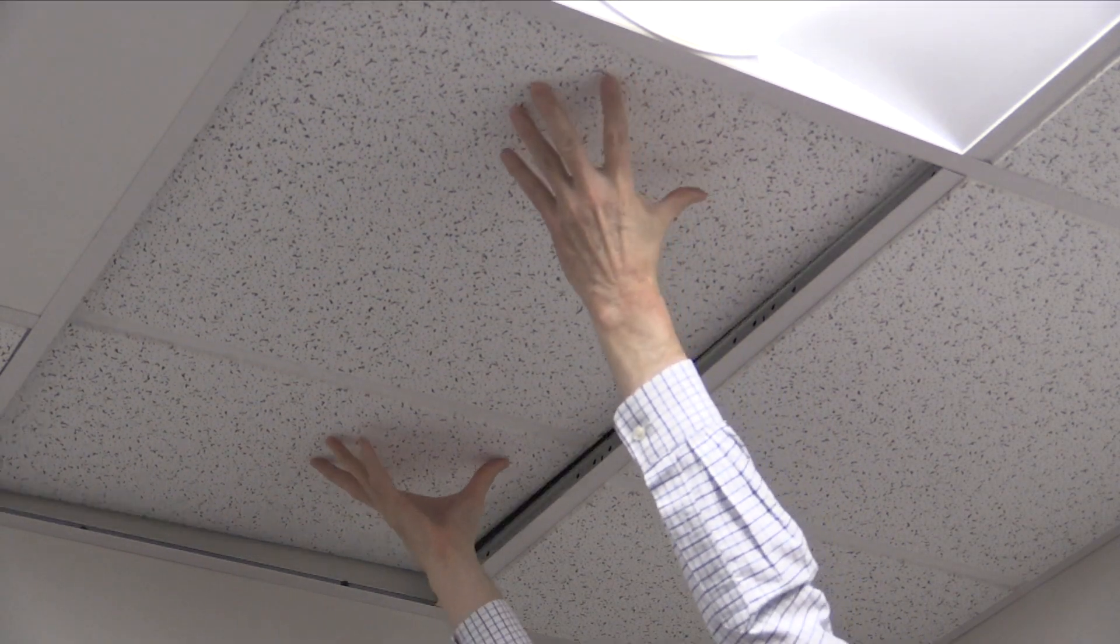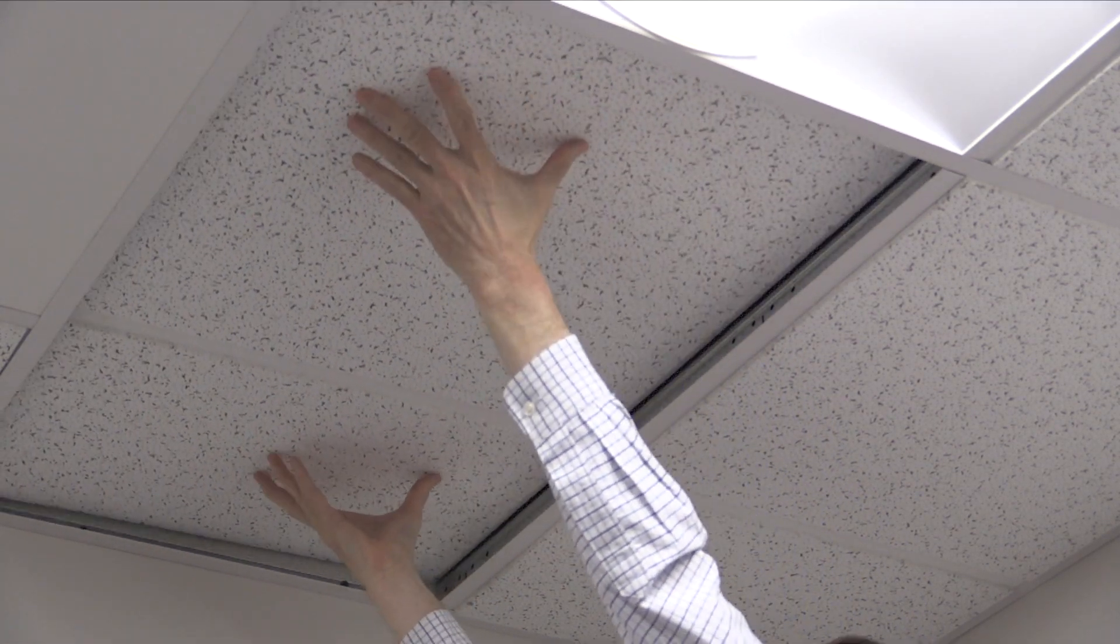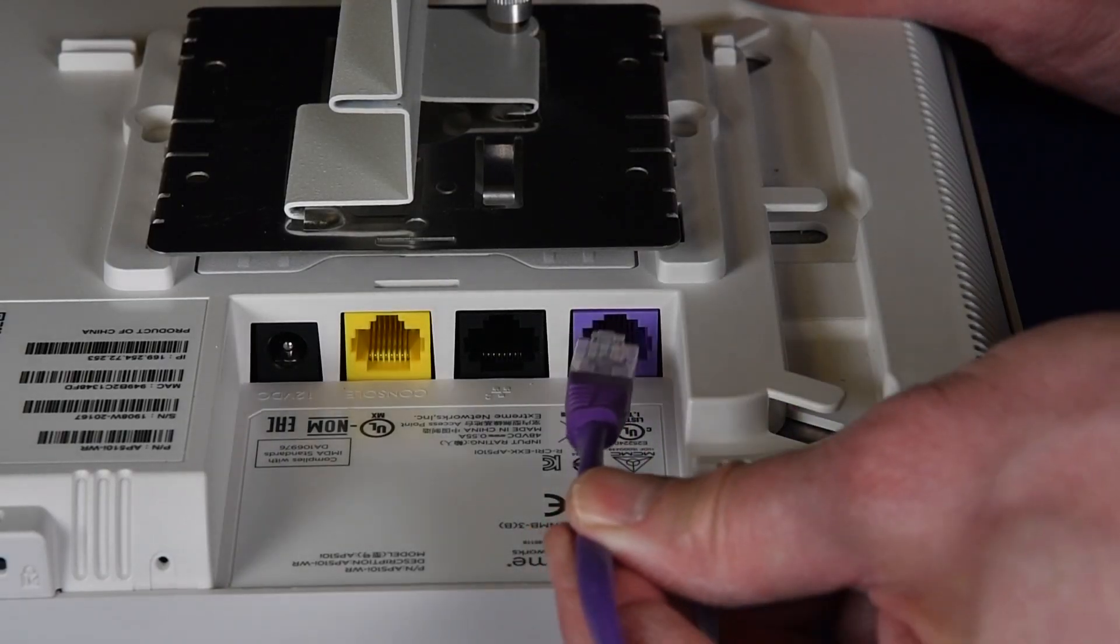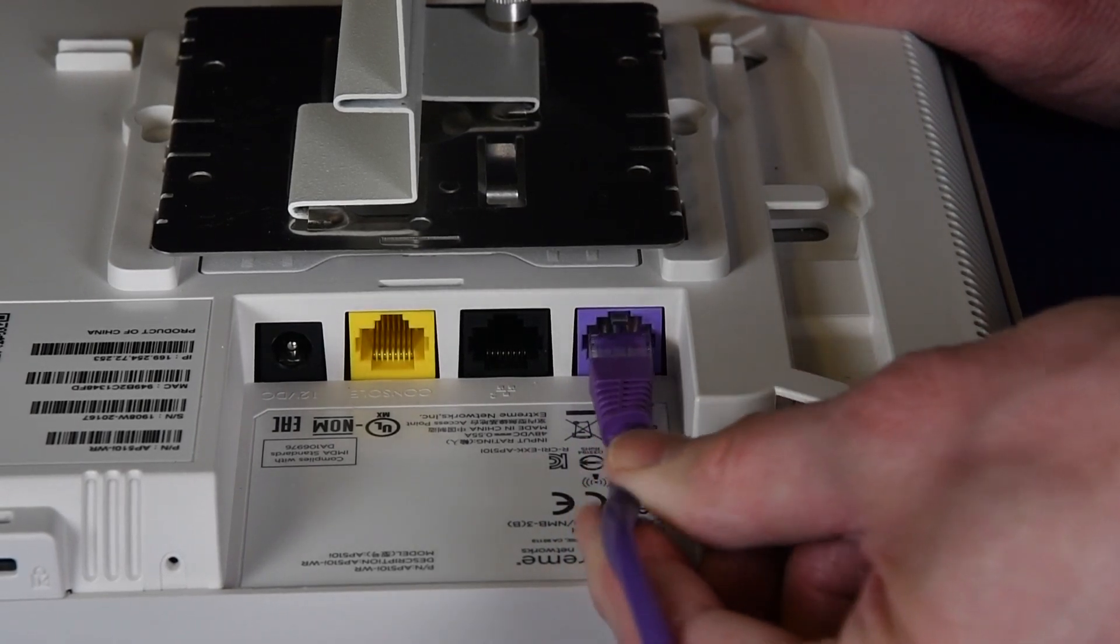Now remove the ceiling tiles to expose where we want to put the bracket on the T-bar. Attach the Ethernet cable's RJ45 connector to the LAN1 port.